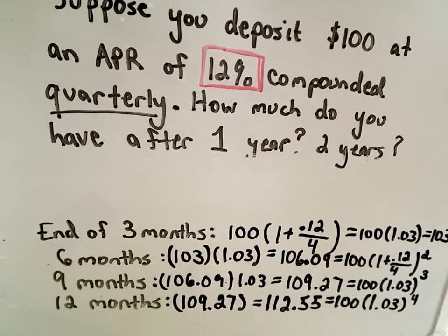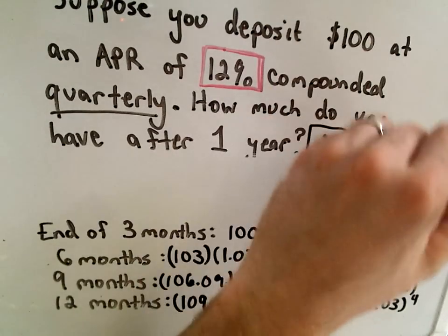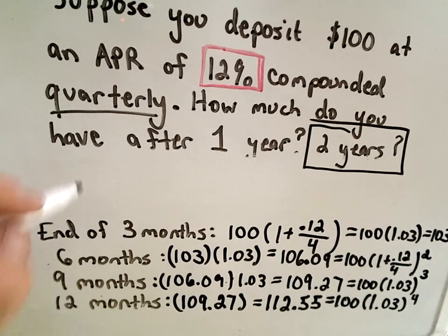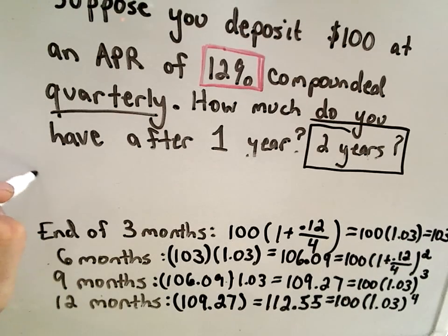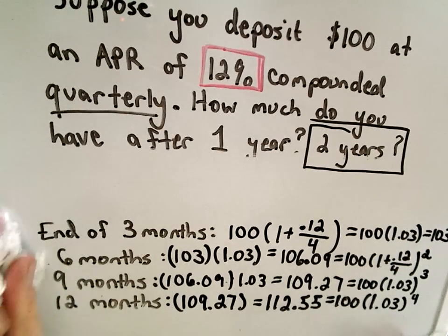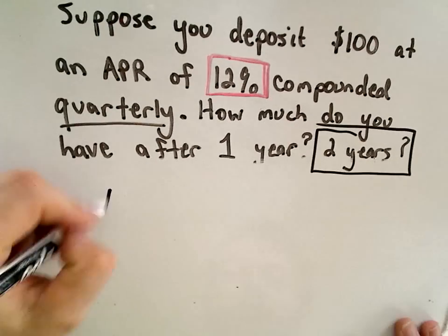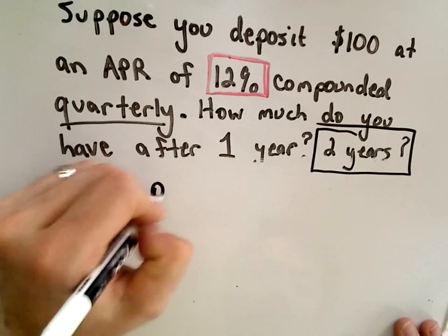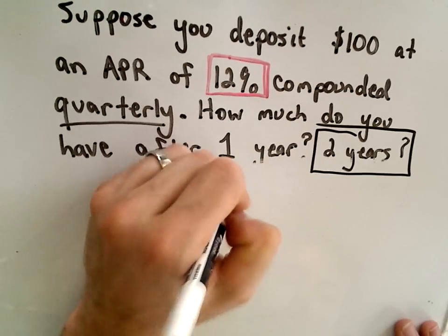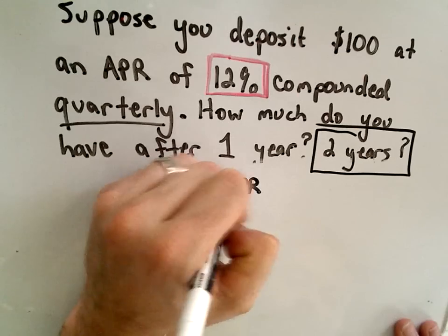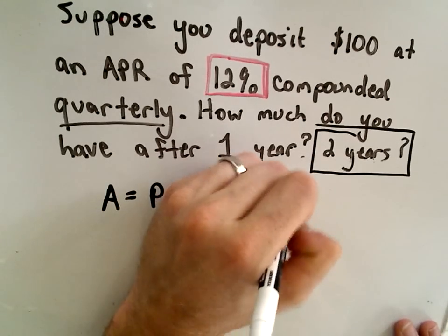If we're compounding n times over y years, that's where the exponent n times y comes into it. So to answer our second question, if it says how much would you have at the end of two years, well, at the end of two years, all I do is use my formula. So it says the amount accumulated is the principal, 1 plus the APR, divided by the number of compoundings, n times y.